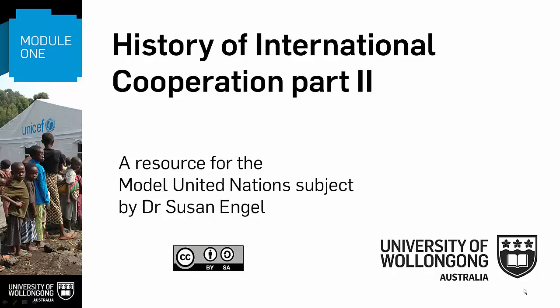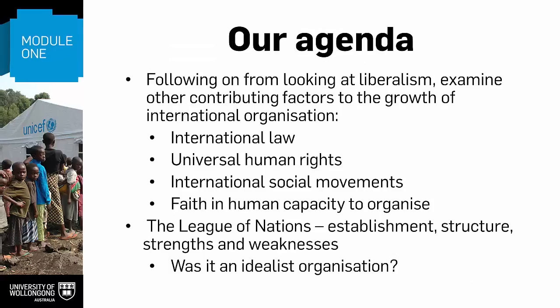Welcome to the second part of this brief history of international cooperation for INTS 201 Model United Nations. Following on from looking at liberalism, we're going to examine other contributing factors to the growth of international organisation. Specifically, we'll look at the role of international law, the growth of the idea of universal human rights, the emergence of international social movements, and the growing faith in human capacity to organise as key contributors to this emergence.